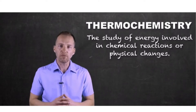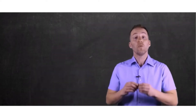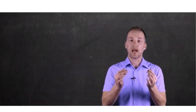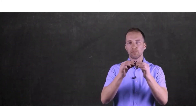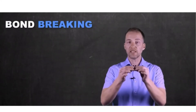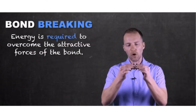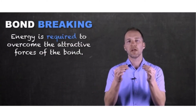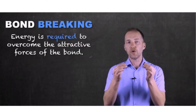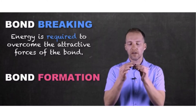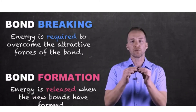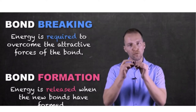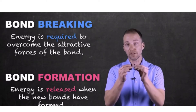Just where does this energy come from? Here are two magnets. If we think about a chemical bond being broken, much like these magnets, it takes energy to overcome the attractive forces. And when new bonds form, energy is released as a result of these two forces — or these two substances — coming together and forming that bond.